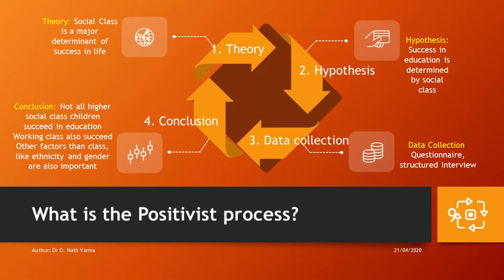So the sociologist would draw a hypothesis — for instance, based on social class and education. Suppose she states a hypothesis such as: success in education is determined by social class, and she wants to find out whether social class is really such an important determinant of success in education. To do that, if the sociologist is using quantitative data, she can use either questionnaires or interviews to collect information from a number of people. Once she gets this information, she can write it down in the form of figures, charts, and tables from where she would draw her conclusions.